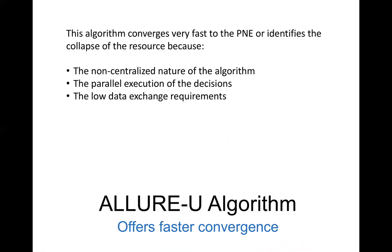The Allure-EU algorithm offers faster convergence to the pure Nash equilibrium point and identifies the collapse of the resource. Since the algorithm executes in a distributed manner, each user executes it separately with parallel execution of decisions, and only low data exchange is needed among users.